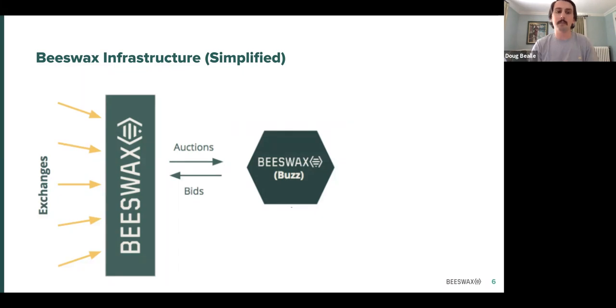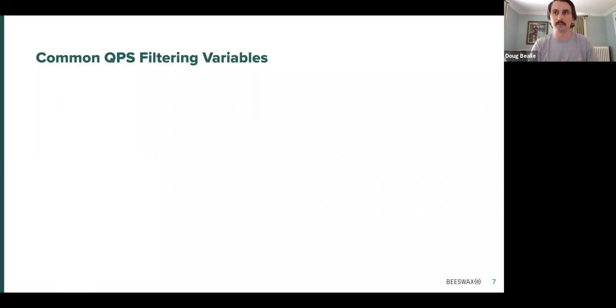Some examples of the kinds of things that we can filter on, common QPS filtering variables: we usually start with geo. What countries are you buying in? That's a good place to start. Limit it just to the countries that you're actually going to ever buy traffic in. Within a given country, we can filter based on state, DMA. Maybe you're only buying in certain states. Maybe you want to increase your capacity in very targeted regions. We can even go down to the city and zip code level. We can create different filters for different geo regions, or just completely filter out places that you're not going to buy.